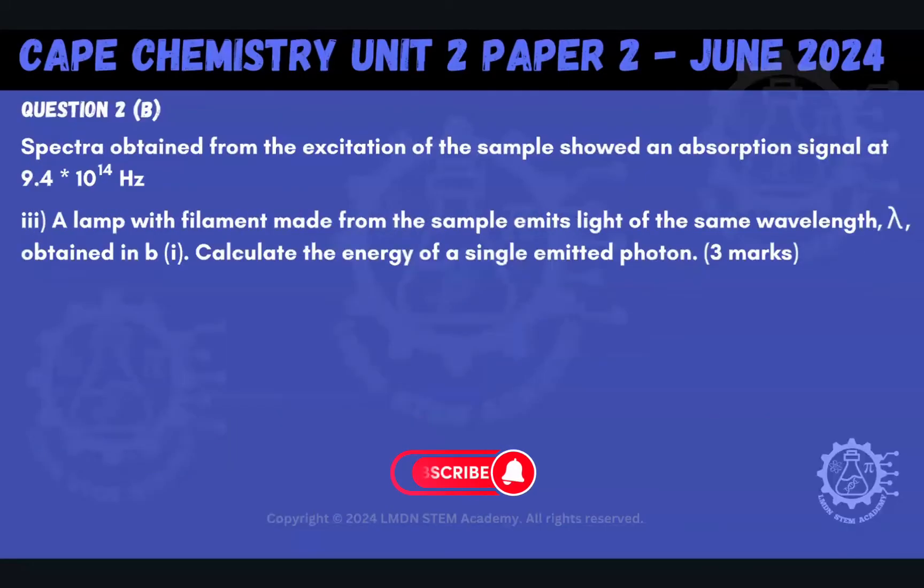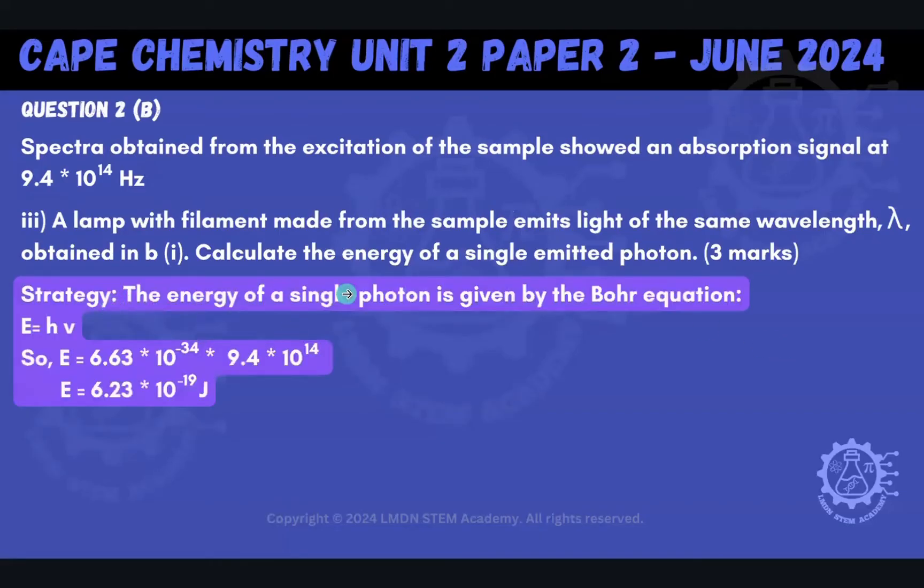So let's go ahead now to B part 3. So it says that a lamp with filament made from the sample emits light of the same wavelength, so the one that we just calculated in B part I. Calculate the energy of a single emitted photon. So we're being asked to calculate energy now of a single emitted photon.